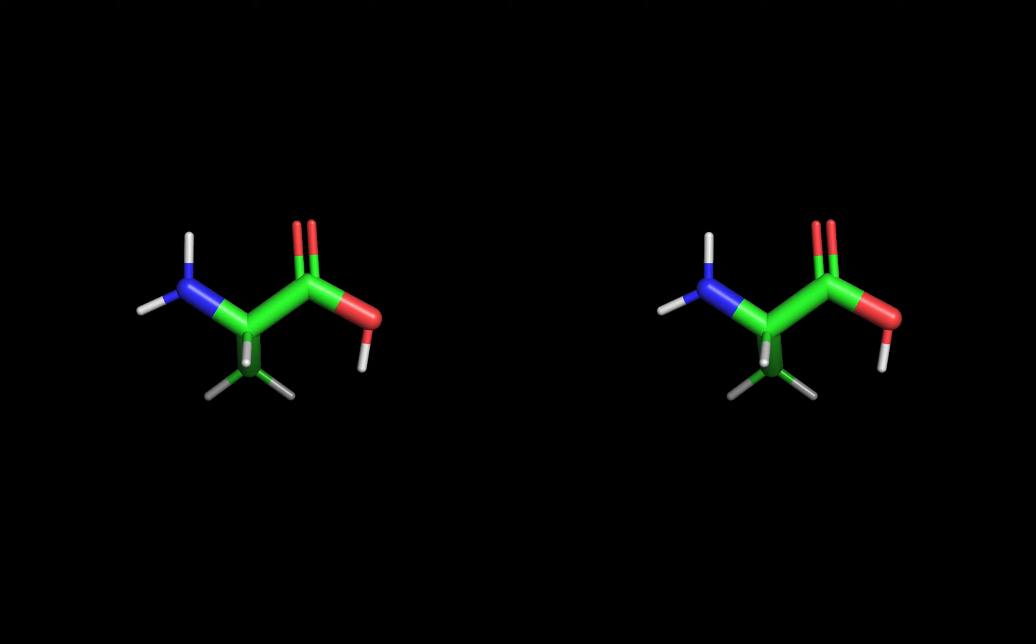This structure is not shown at biological pH. Notice there is a white colored hydrogen atom on the other oxygen. Amino acids ionize and form zwitterions in the body. So that hydrogen atom would be on the amine group at biological pH.